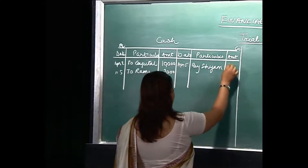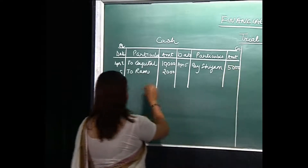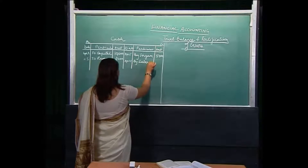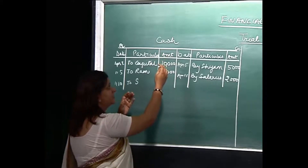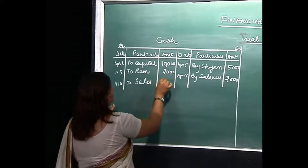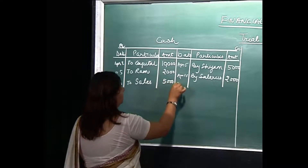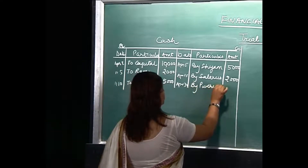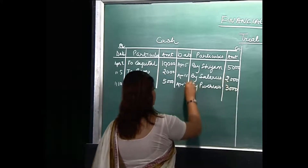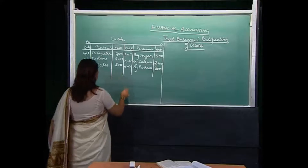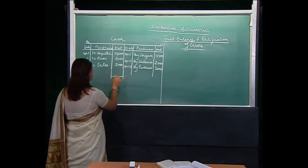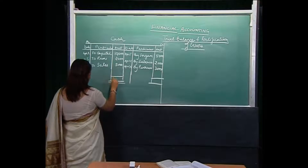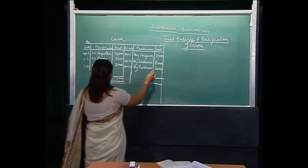Cash paid to SHAM is 5,000 rupees. Expenses being paid off — salaries paid — 2,000 rupees. Cash sales made, so cash account debit to sales amounts to 5,000 rupees. Then there are purchases of 3,000 rupees. Right now we are not doing the balancing; we just write down the totals. It amounts to 17,000 on the debit side and 10,000 on the credit side.